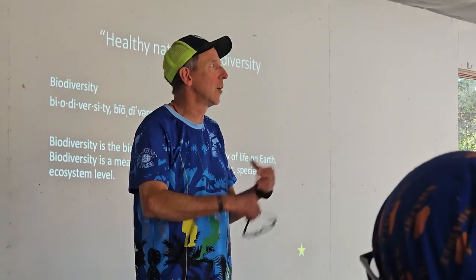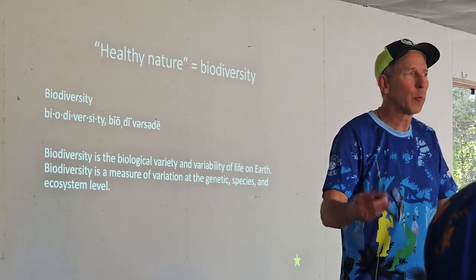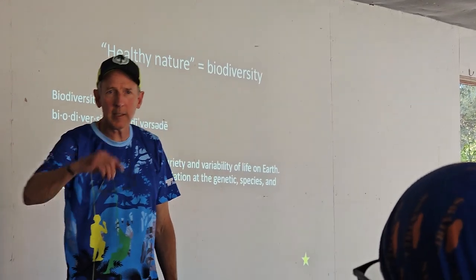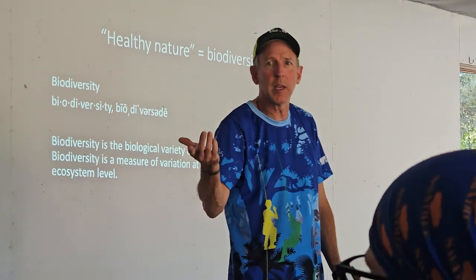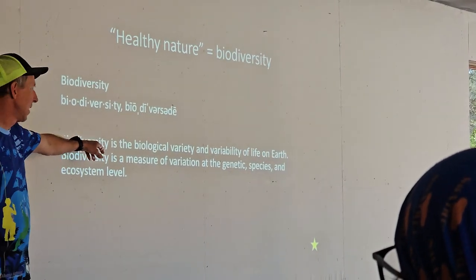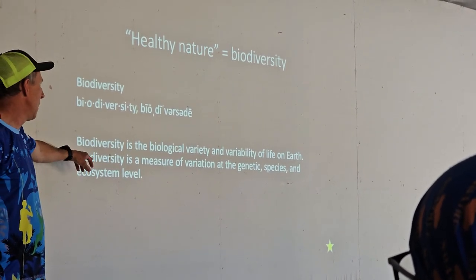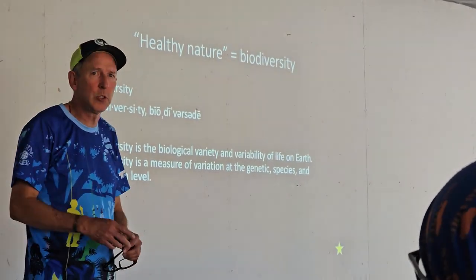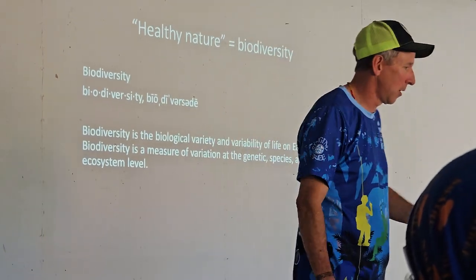The word biodiversity gets thrown around all the time — it's in the news, on the radio, in print — but we never define what it means. I hate imprecise words you say all the time that mean nothing. The textbook definition of biodiversity is the biological variety and variability of life on Earth. It's a measure of variation of ecosystems and species. In a nutshell, biodiversity is all life on Earth.